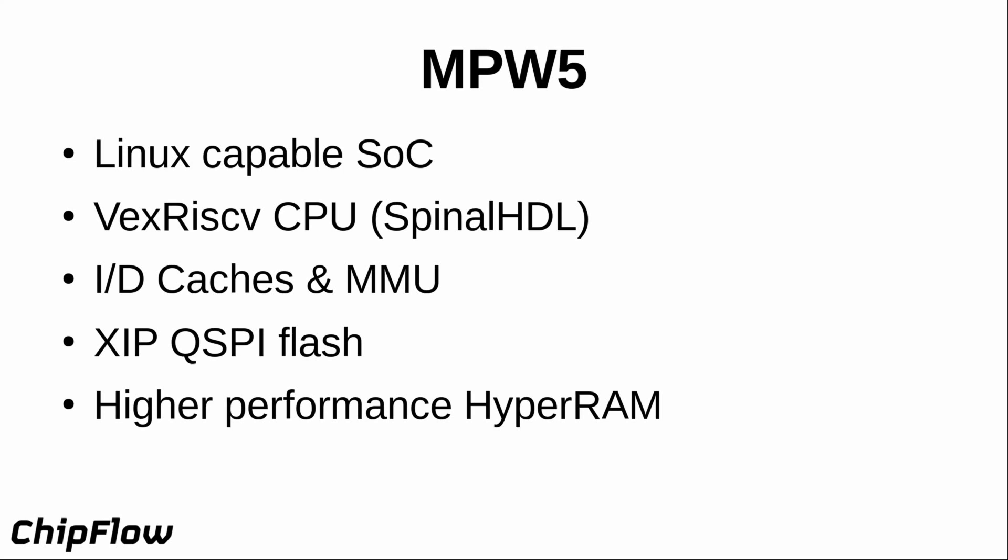With the improvements in MPW4, for MPW5 we decided to aim for something more ambitious: a Linux-capable SoC — at least in theory. It won't run anything quickly, but it should boot Linux and run simple command line tasks. We switched from Minerva to the VexRiscv CPU, written in SpinalHDL — another hardware description framework that generates Verilog, which can be integrated into Amaranth. This is a more complex CPU with instruction and data caches and an MMU, important for running full Linux. We used the same execute-in-place quad SPI flash arrangement and rewrote the HyperRAM controller to be much higher performance to speed up boot time.